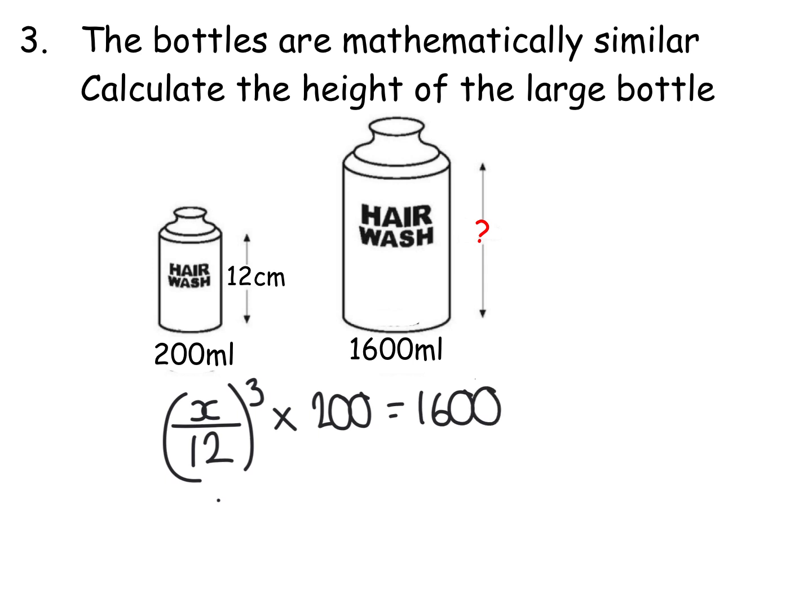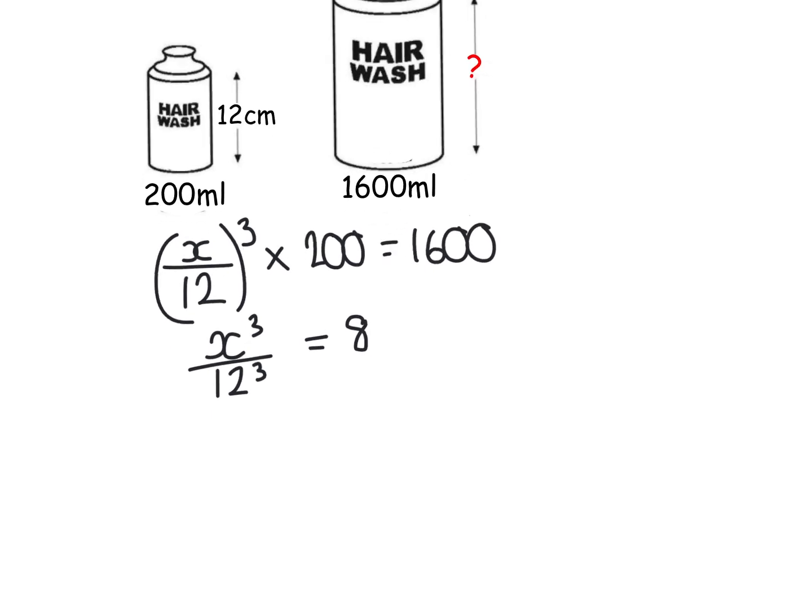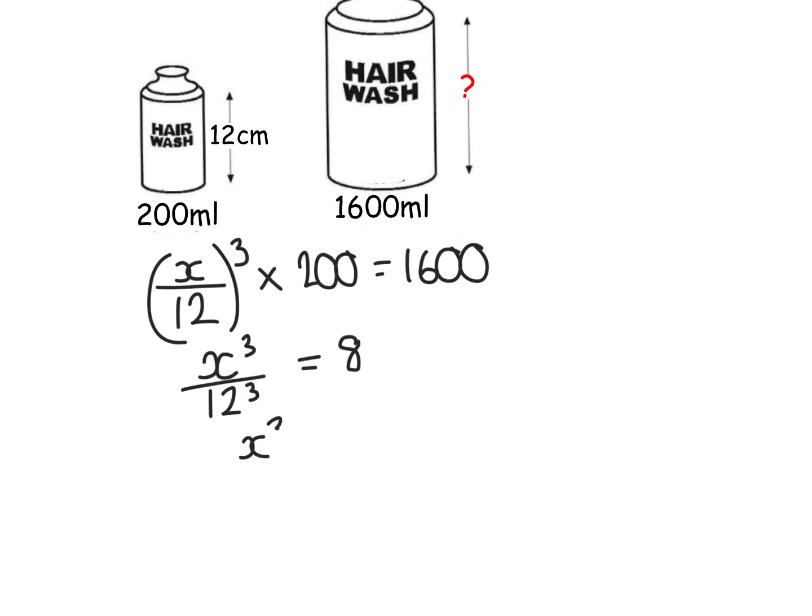Now that would have given me x cubed over 12 cubed equals 1600 divided by 200, which is, I'm just going to cheat here because I know that that's just 8. And then x cubed would have been 8 times 12 cubed, which gives me 13824. And then if I take the cube root of that number, it gives me the answer of 24 centimetres.